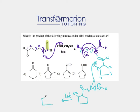Under heat conditions, my OH can leave and I can form a double bond between the alpha and beta carbons — this is an elimination reaction. The alpha carbon is the carbon next to the C=O, and the beta carbon is the one next to the alpha, one carbon away from the C=O. Under heat, OH leaves and we do an elimination that forms the double bond between the alpha and beta carbons.